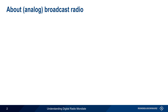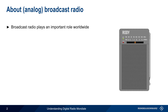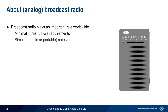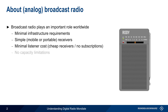Even in the age of cell phones and the internet, broadcast radio continues to play an important role worldwide. Compared to cellular or internet, broadcast radio has minimal infrastructure requirements. It uses simple receivers which can be mobile, portable, and/or battery powered. It also has minimal cost to the listener — receivers are generally inexpensive and there are no subscription fees. Unlike internet and cellular, broadcast radio is also not capacity limited; it doesn't matter if one person or a million people are listening simultaneously. Broadcast radio is also very important in distributing information during emergencies or disasters.